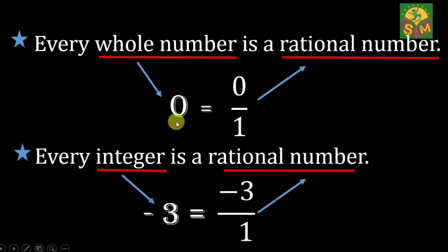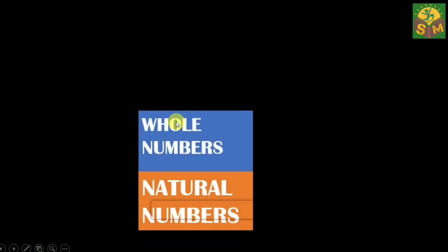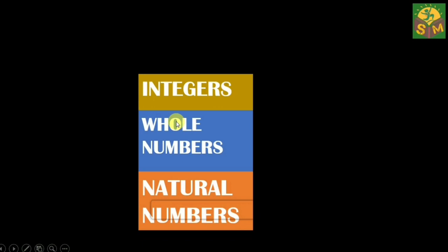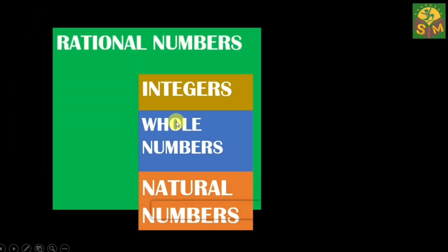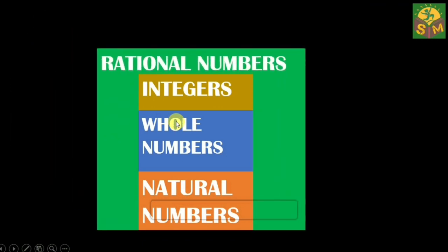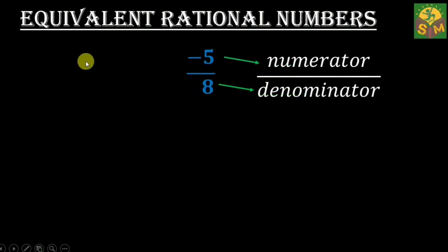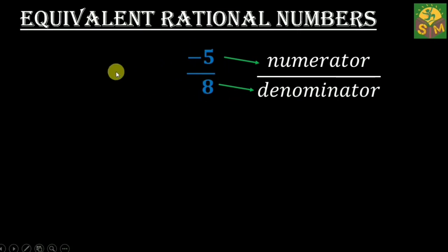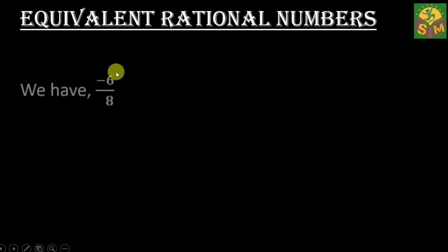From the above observation we can conclude that all natural numbers, all whole numbers, and all integers are also rational numbers. A rational number can be written with different numerators and denominators.